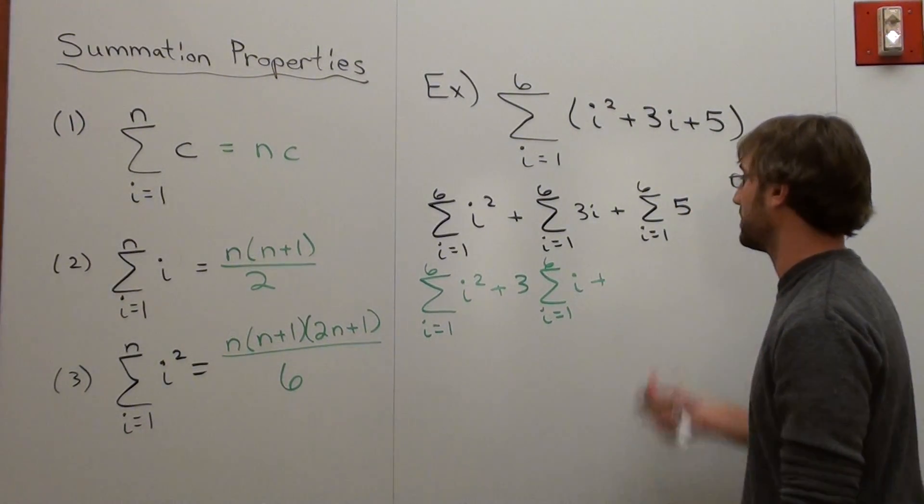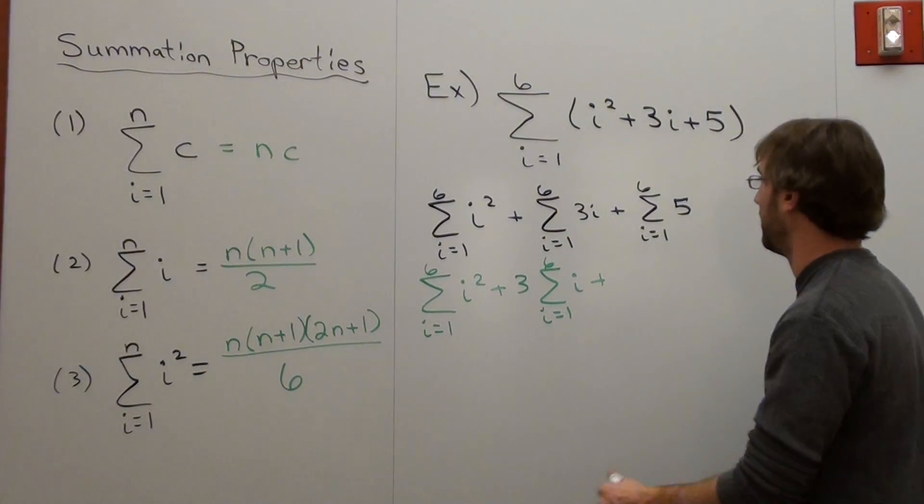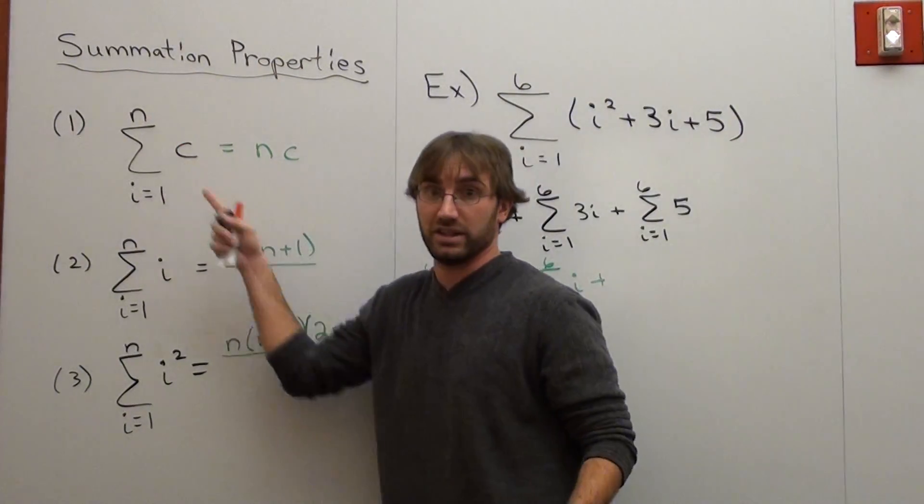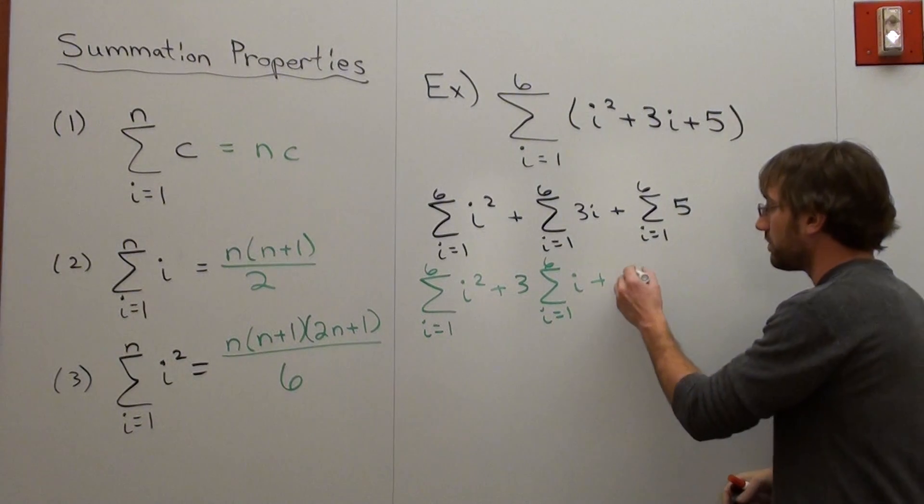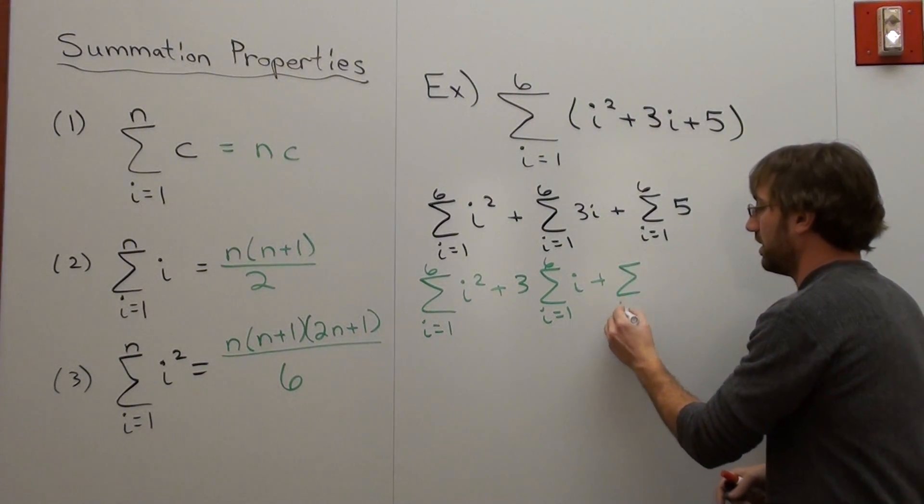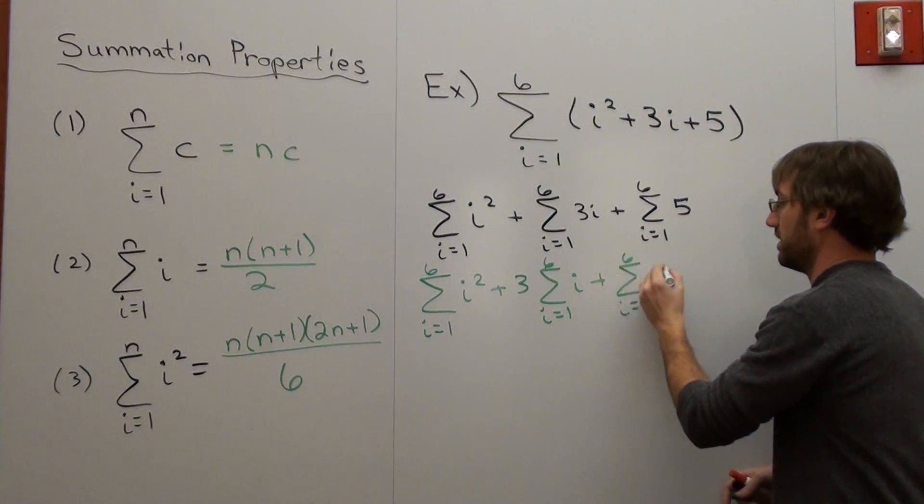I already know this is 30, so why am I going to sit there and do that one? And I know it's 30 because all I've got to do is multiply n times c. That's this one right here. Summation from i equals 1 to 6 of 5.